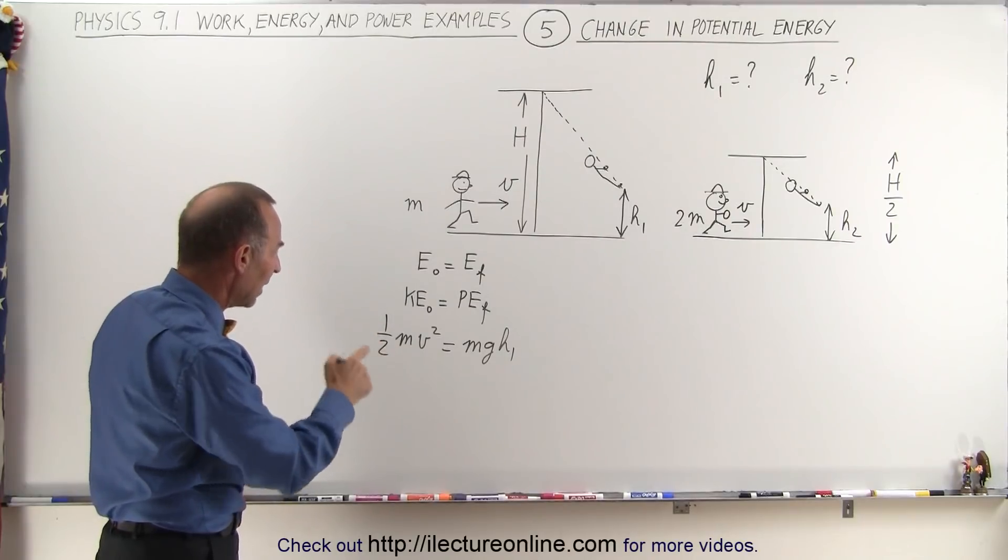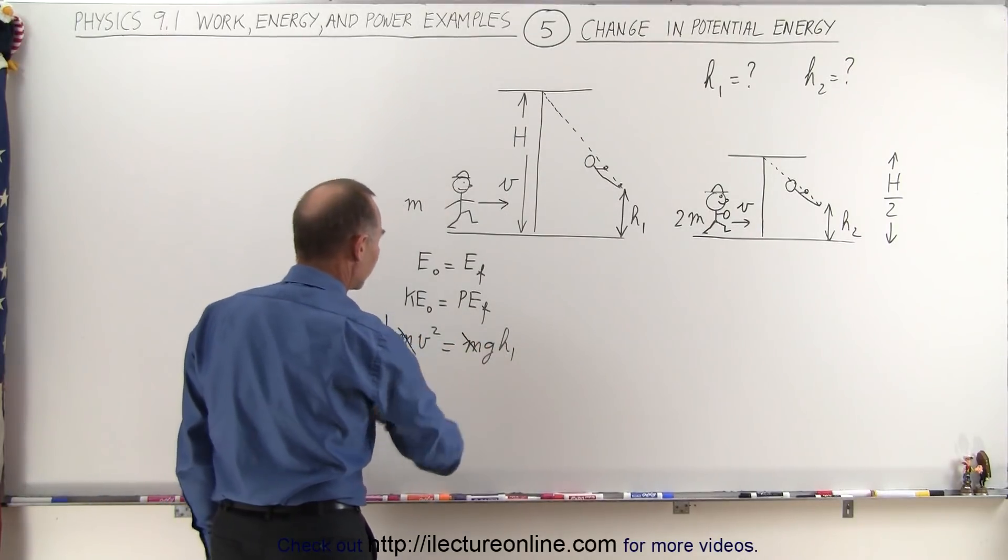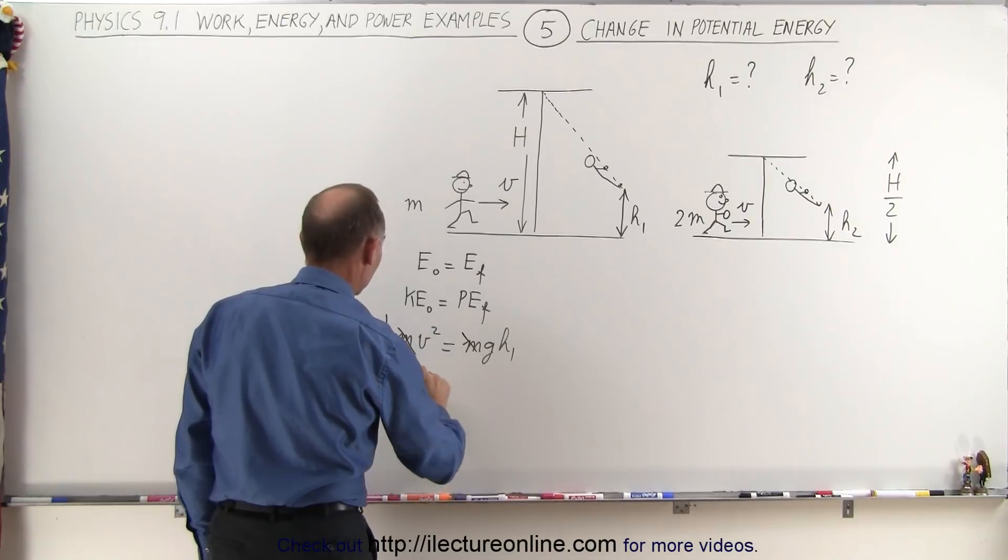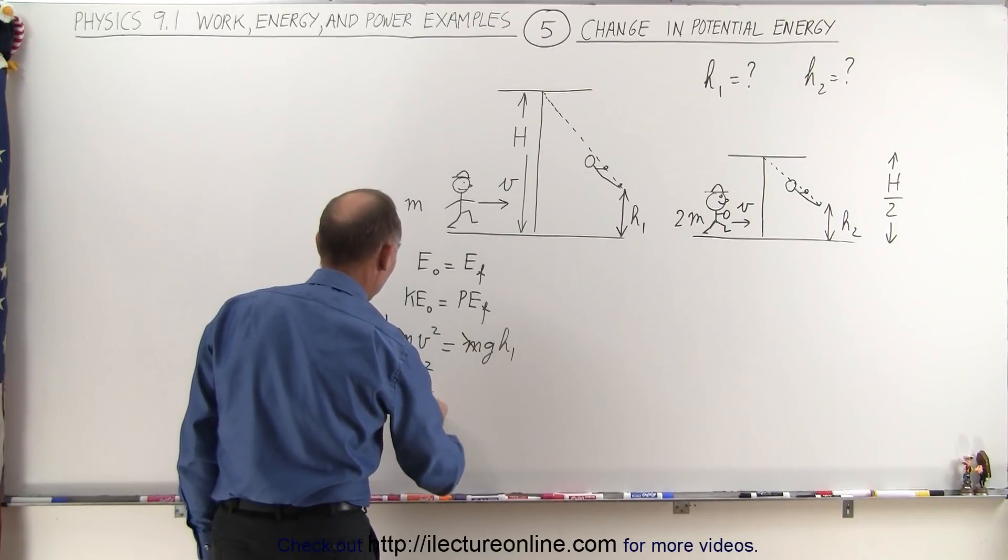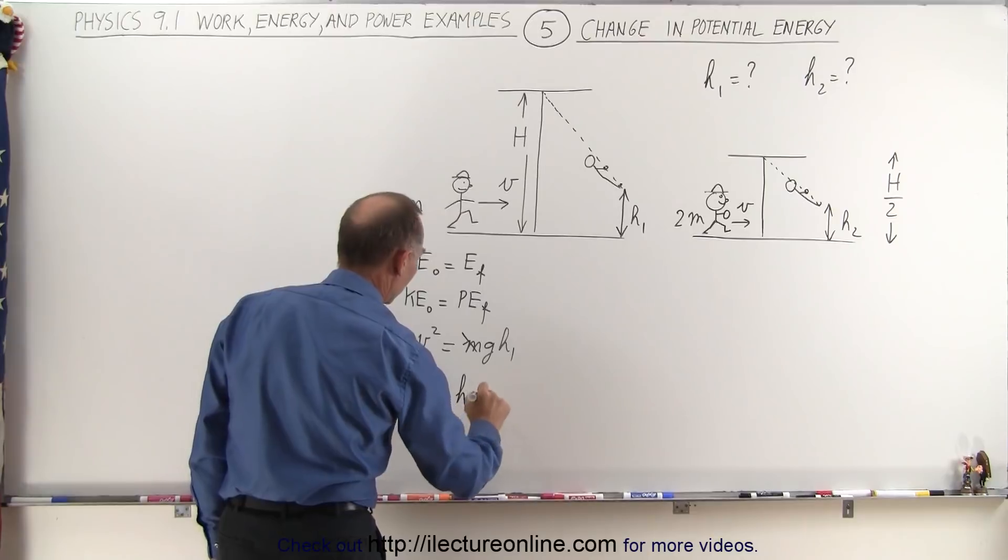Notice that we have an m on both sides, that cancels out. We can divide both sides by g. So we can say that v squared divided by 2g is equal to h1.